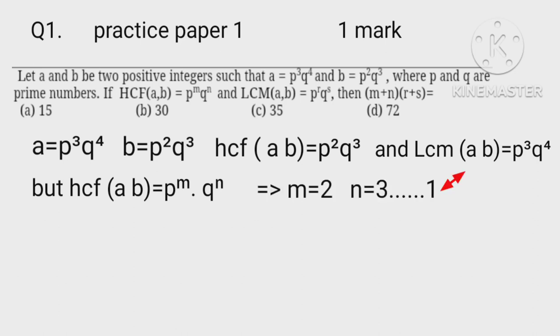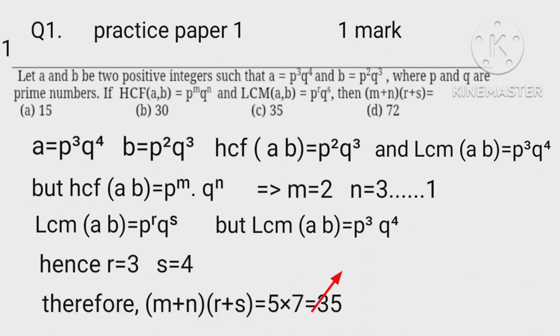This implies that m equals 2, n equals 3. Now LCM of a, b equals p cubed q to the power of 4, hence r equals 3, s equals 4. Therefore m plus n plus r plus s equals 5 plus 7 equals 35.